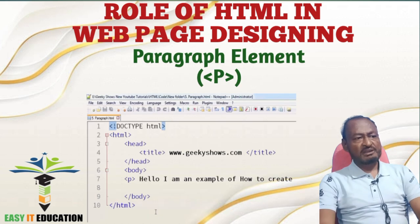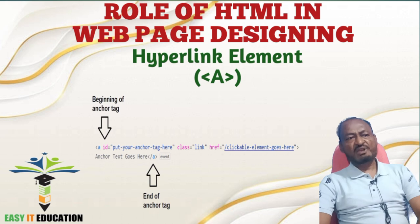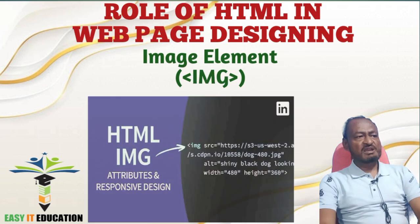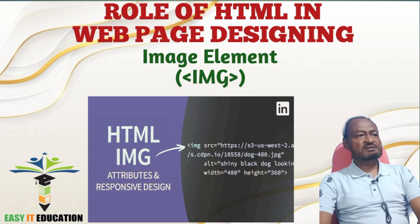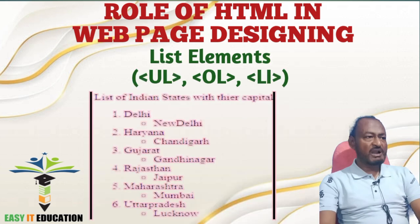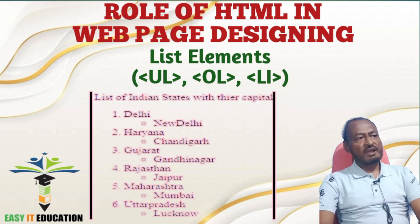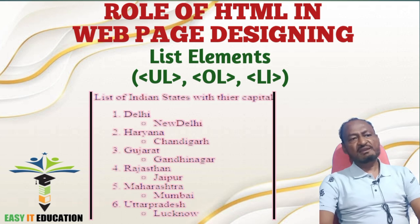Number 7: Paragraph Element. It represents a paragraph of text. Number 8: Hyperlink Element. It creates a hyperlink to another web page or a specific location within the same page. Number 9: Image Element. It is used to embed an image in the web page and requires the src attribute to specify the image source URL or file path. Number 10: List Elements — UL, OL, LI. They are used to create unordered lists (UL) and ordered lists (OL) with individual list items (LI) inside them.